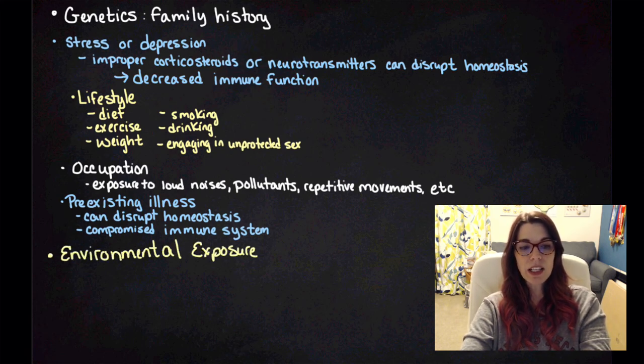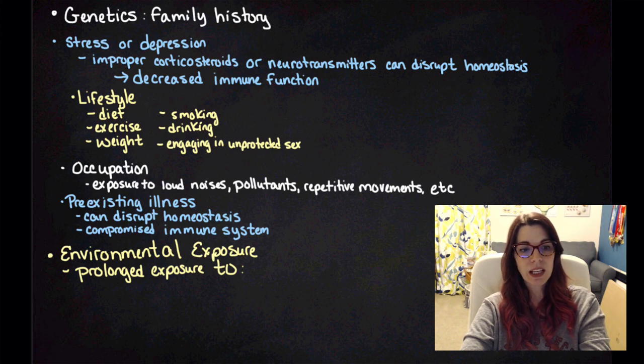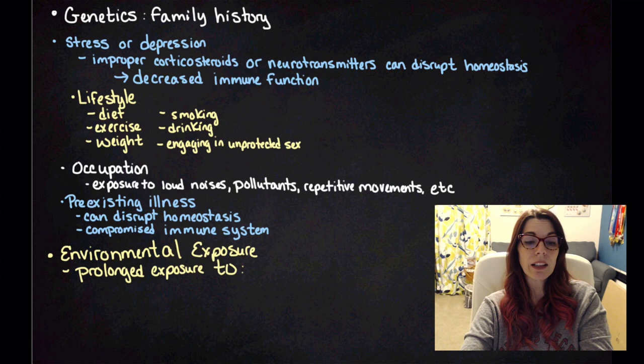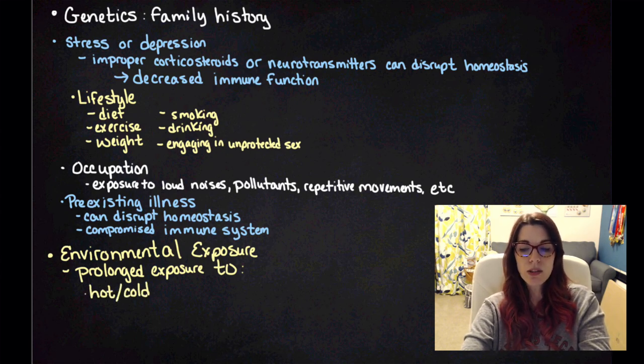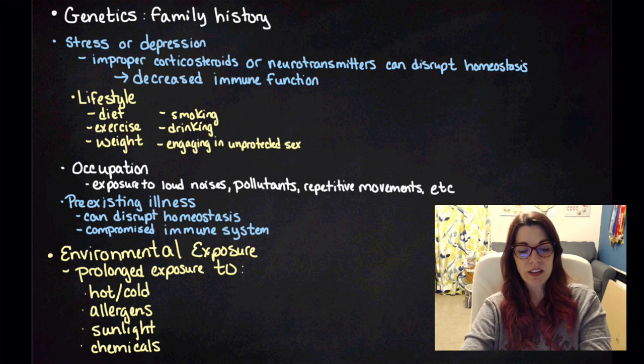And then the final one is going to be environmental exposure. Prolonged exposure to a lot of different things can result in you contracting a disease or being more likely to contract a disease. So prolonged exposure to extreme hots or extreme colds, prolonged exposure to allergens, to sunlight, and to various chemicals present in your environment.